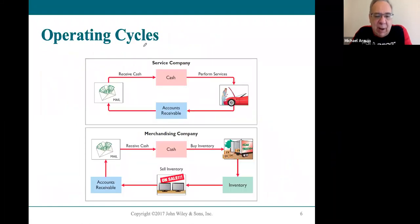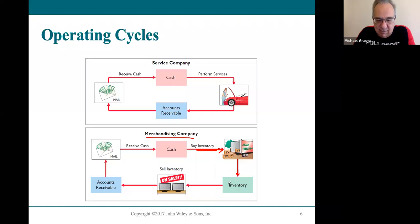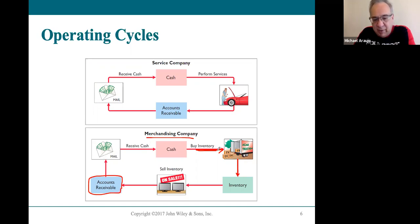A service company performs services, may have accounts receivable, then receives cash — it's simplistic. Merchandising companies have a more complex operating cycle: they have to buy inventory first, which is their asset; then sell the inventory, sometimes on account; then wait to receive payment; then use that cash to buy more inventory. It just becomes a cycle — or as they say, not a circle, a cycle.